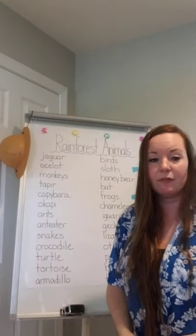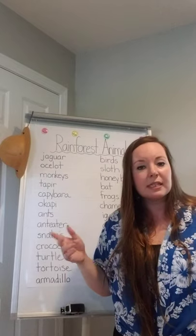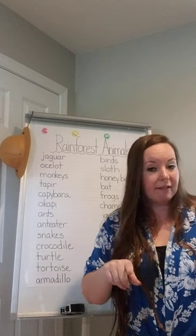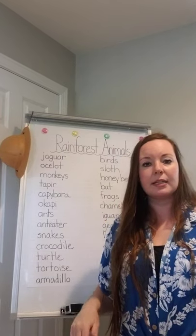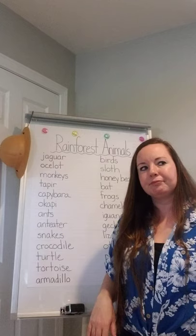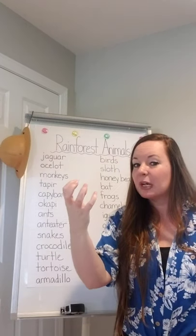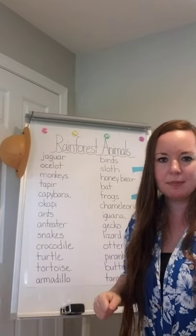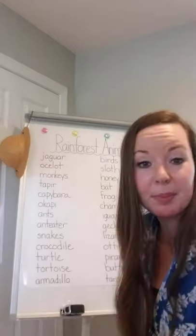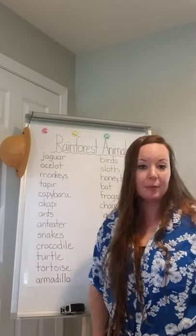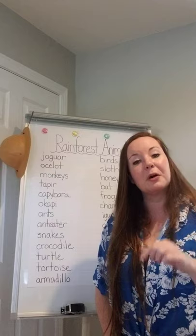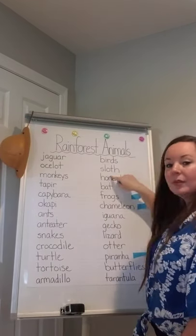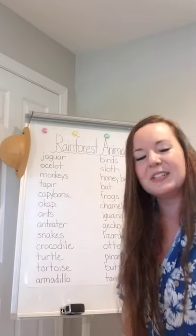Next I have birds — there are so many different types of birds in the rainforest. A few that we'll see in books and videos are parrots — including the macaw parrot, which is beautiful with its reds, blues, and yellows — a toucan with that big giant beak that's super hard and can crack nuts, and hummingbirds, which go to drink nectar from all those beautiful flowers in the rainforest.